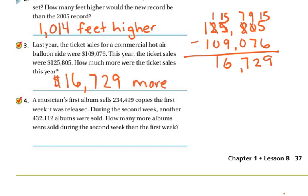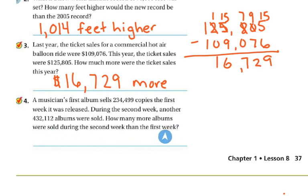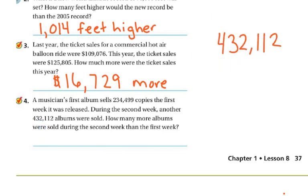Number 4: a musician's first album sells 234,499 copies the first week it was released. During the second week, another 432,112 albums were sold. How many more albums were sold during the second week than the first week? We're going to subtract the two to find the difference. Put the larger number on top — it's really important that you line up your numbers. Use graph paper if you need to.